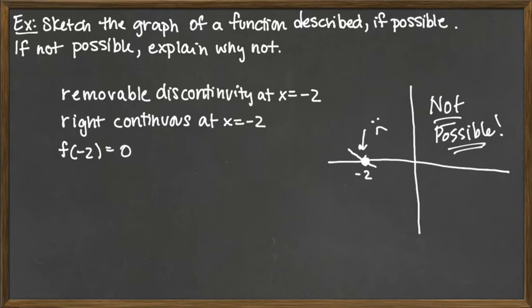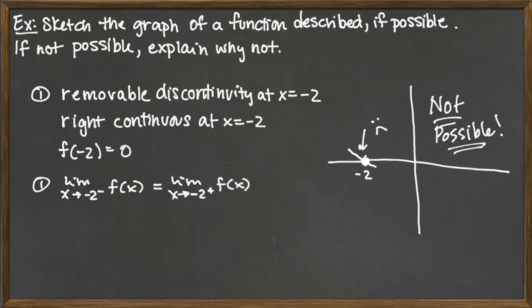So removable discontinuity. So here for statement one, to have a removable discontinuity, what that's telling me is that the limit as x approaches negative 2 from the left has to match the limit as x approaches negative 2 from the right. That's what that's telling me.